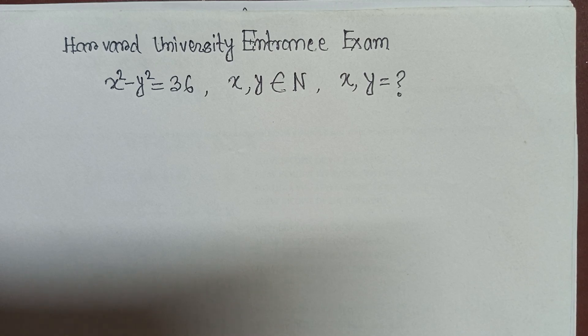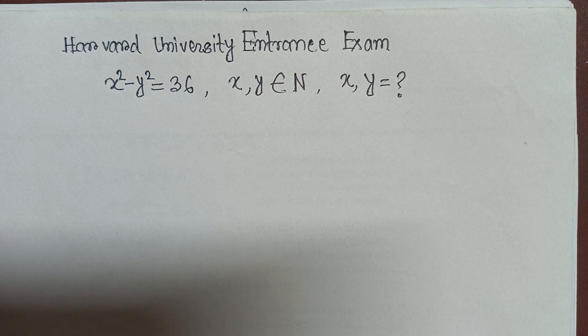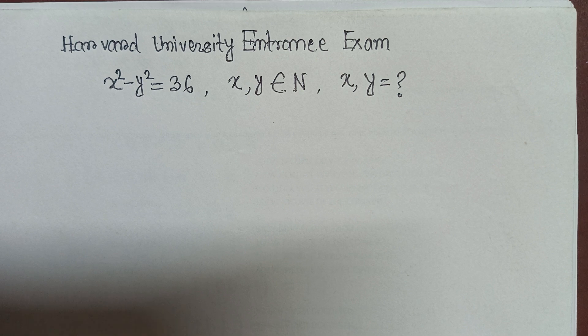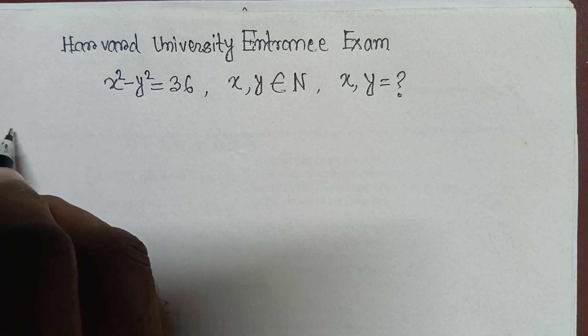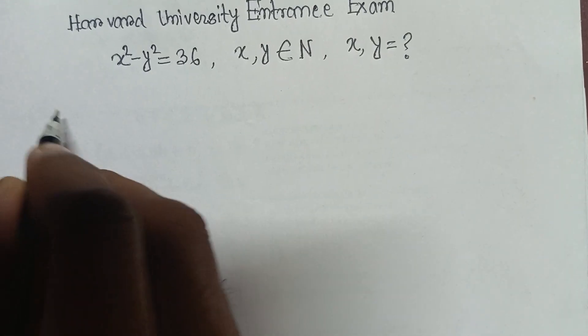Hello everyone, hope you are doing well. Today we are going to solve a Harvard University entrance exam question: x squared minus y squared is equal to 36, and x and y should be real natural numbers. What should be the value of x and y? Let's start the solution.